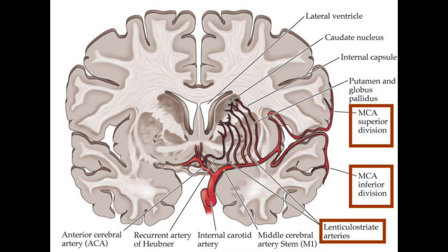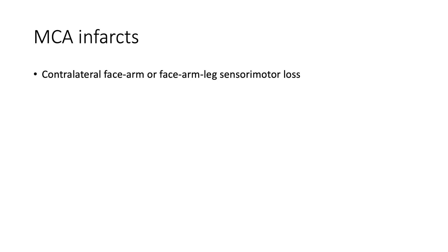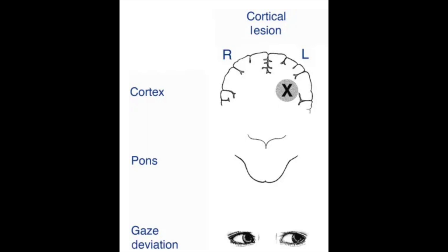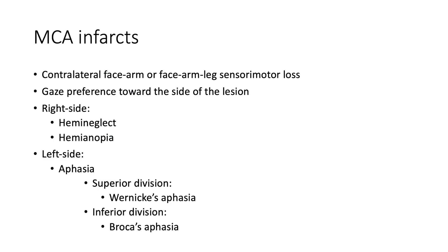Let's go over MCA, ACA, and PCA infarcts. First, let's cover MCA infarcts, which are relatively common. MCA infarcts cause contralateral face-arm or face-arm-leg sensory motor loss. Patients with large lesions often show a gaze preference toward the side of the lesion — you can remember this like they look at the lesion. Other symptoms vary depending on which side of the brain is affected.